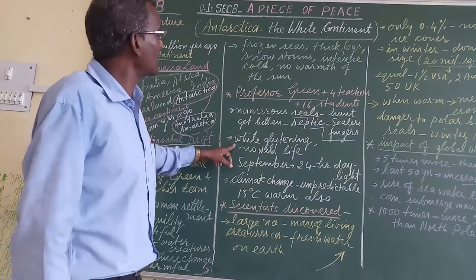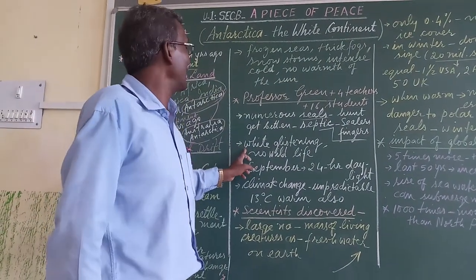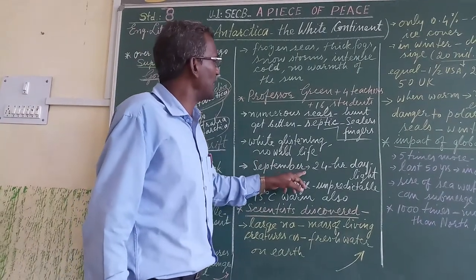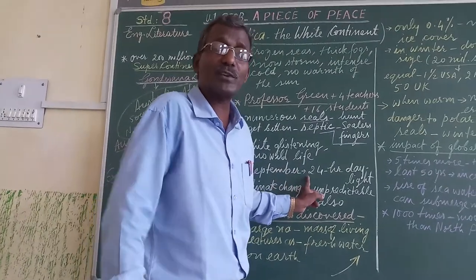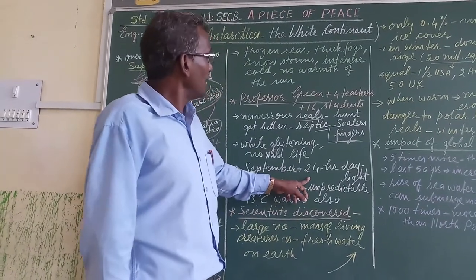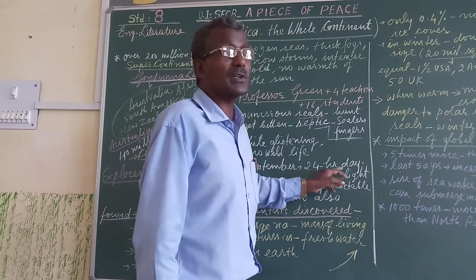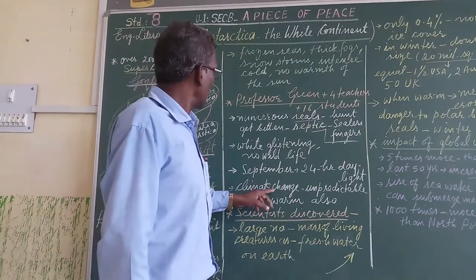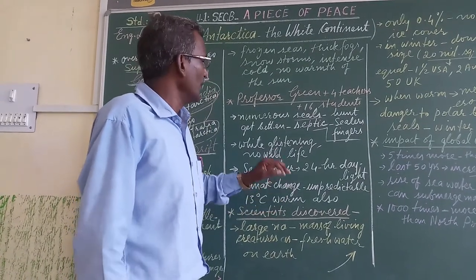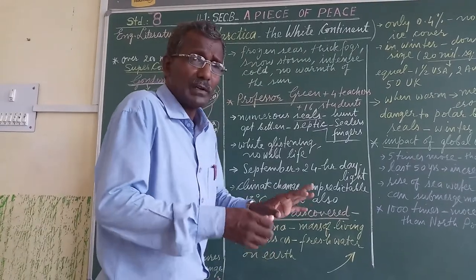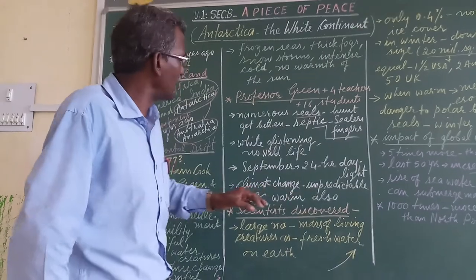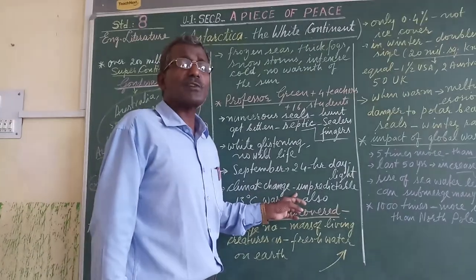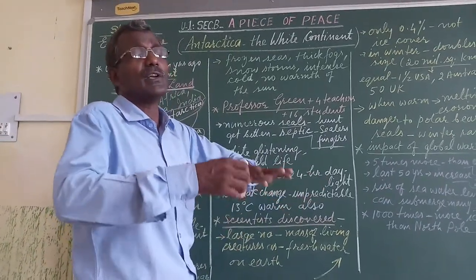They found that the entire Antarctica appears glistening and shining, and there is no wildlife existing there. They also discovered something very unique: in the month of September, when they happened to visit, there is 24-hour daylight — there is no sunset. That was their unique discovery. They also found that climate change is very rapid there — no one can predict when or how much the temperature will change, and it can even rise up to 13 degrees Celsius.